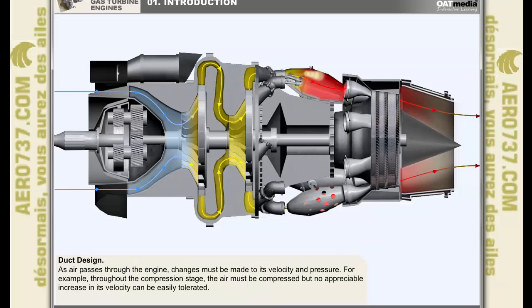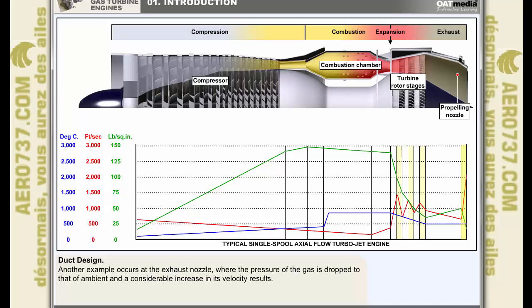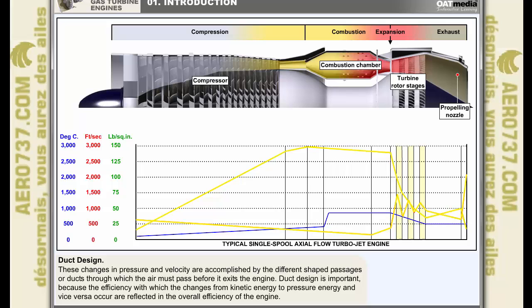As the air passes through the engine, various adjustments must be made to its velocity and pressure. For example, throughout the compression stage, the air must be compressed, but no appreciable increase in its velocity can be easily tolerated. Another example, which we have already seen, occurs at the exhaust nozzle, where the pressure of the gas is dropped to that of ambient and a considerable increase in its velocity results. These changes in pressure and velocity are accomplished by the different shaped passages, or ducts, through which the air must pass before it exits the engine. The design of these ducts is extremely important because the efficiency with which the changes from kinetic energy to pressure energy and vice versa occur are reflected in the overall efficiency of the engine.